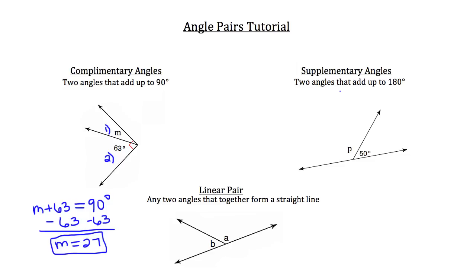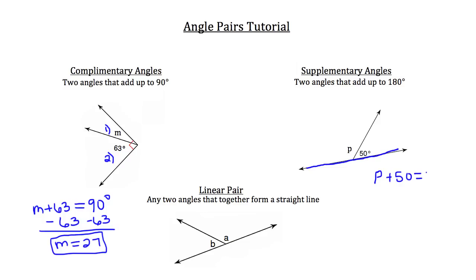Now let's take a look at supplementary angles. Supplementary angles are two angles that add up to 180 degrees. Here we have a straight angle or a straight line — that line is always 180 degrees. Whenever you turn about face and go the exact opposite direction, you're going 180 degrees. So angle p plus 50 degrees must equal 180 degrees — the total measure of this straight angle — because together they add up to 180 degrees and are supplementary.